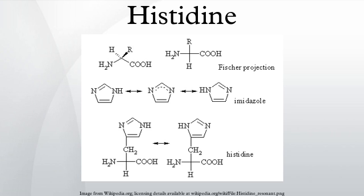Histidine is converted to form iminoglutamate. The formimino group is transferred to tetrahydrofolate, and the remaining five carbons form glutamate. Glutamate can be deaminated by glutamate dehydrogenase or transaminated to form α-ketoglutarate.